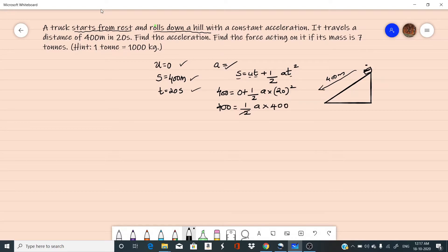This 2 and this 400 will get cancelled and this will become 200, so 400 equal to 200A. From this we can see A equal to 400 by 200, that is 2 meters per second square. This is the acceleration.